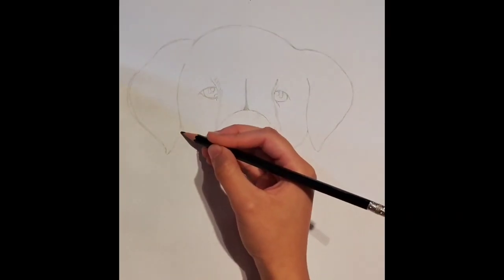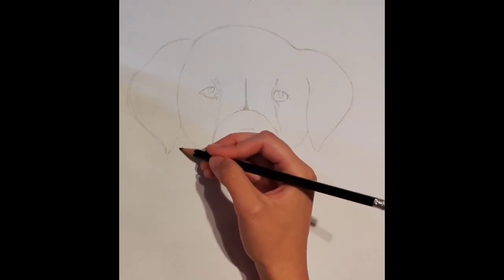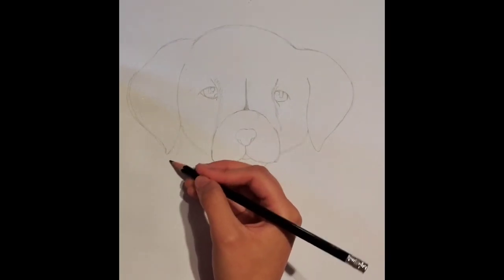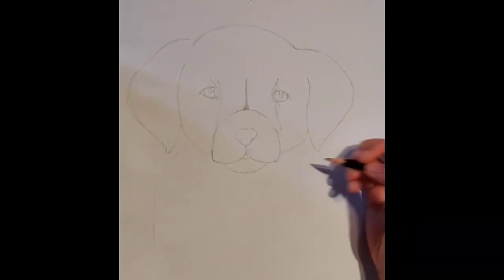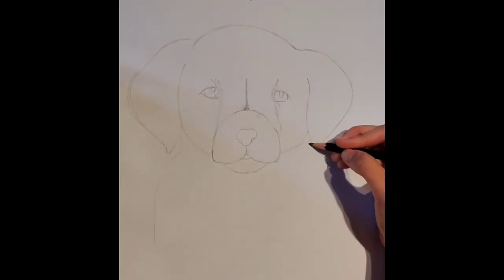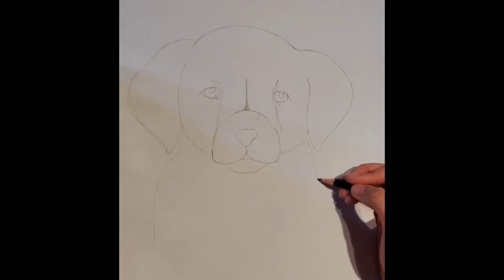Now that the head of our dog is almost complete, we got one final step. From the corners of the ears to the face, draw a curve which will become the body of the dog. Make sure to do this on both sides and draw it out like so.